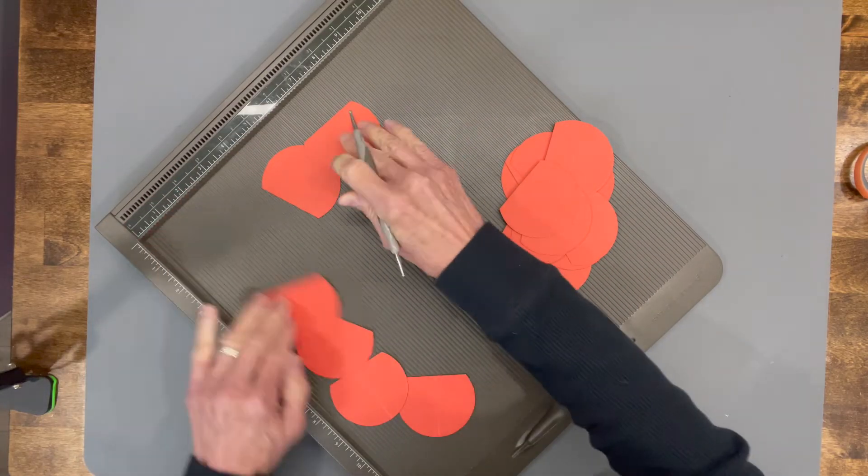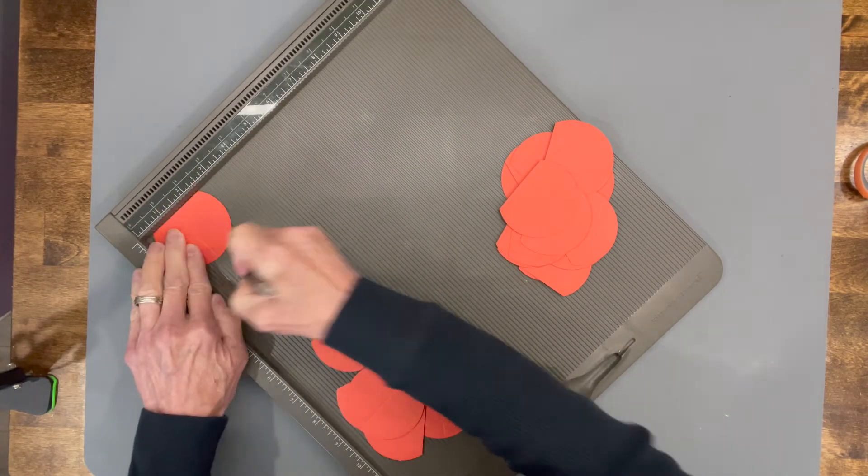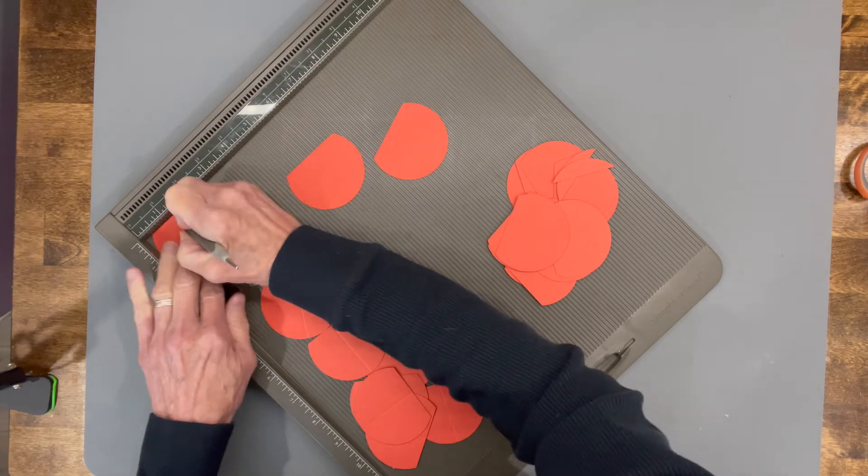If you don't have a scoring board, you can just fold them in half. If you have a bone folder, you can just kind of flatten them out with that.